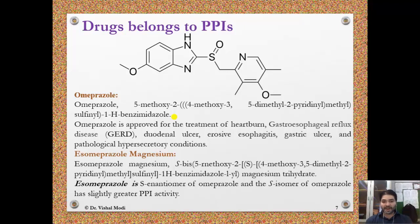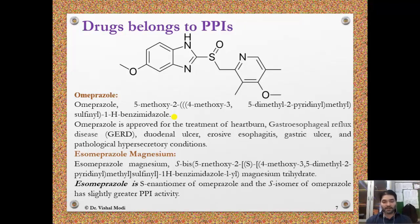Esomeprazole magnesium is the S-isomer of omeprazole. Its IUPAC name is S-base-5-methoxy-2-[(S)-(4-methoxy-3,5-dimethyl-2-pyridyl)methylsulfinyl]-1H-benzimidazole magnesium trihydrate. Esomeprazole is the S-enantiomer of omeprazole and has slightly greater proton pump inhibitory potency, meaning esomeprazole is more active compared to omeprazole, while omeprazole is a racemic mixture.